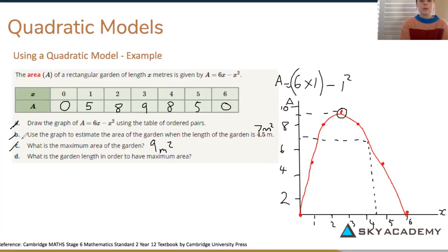D, what is the garden length in order to have the maximum area? So when a equals 9, x will equal 3. And we can also check that on our table of values. When a equals 9, x will equal 3. So that's a real life application of a quadratic function and we have drawn a quadratic model to model that function.